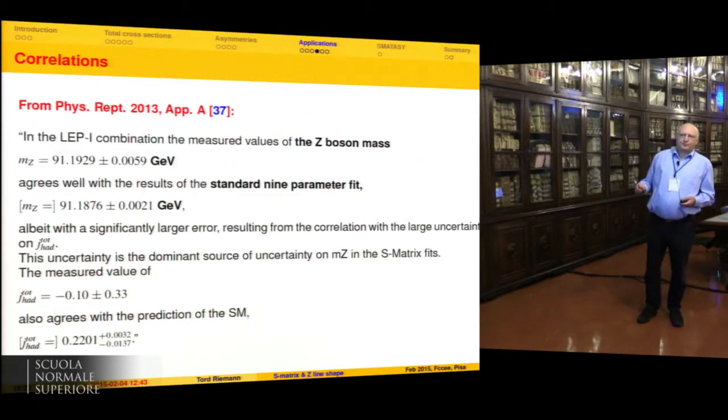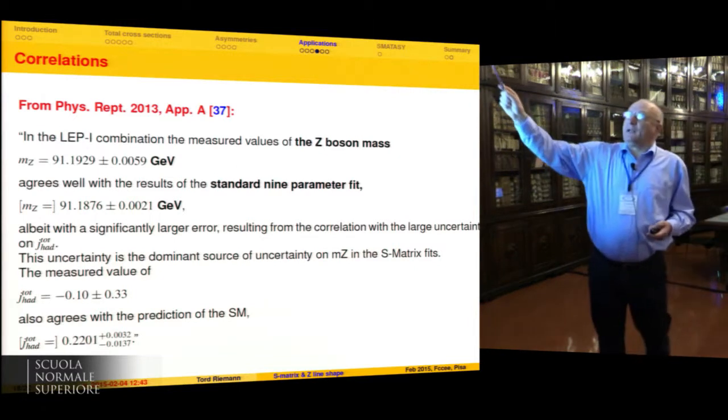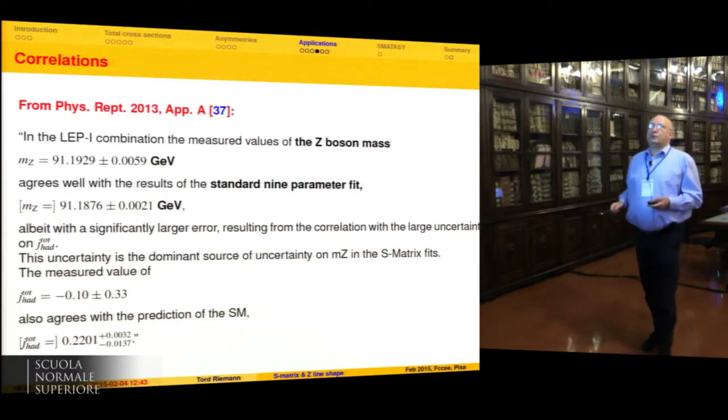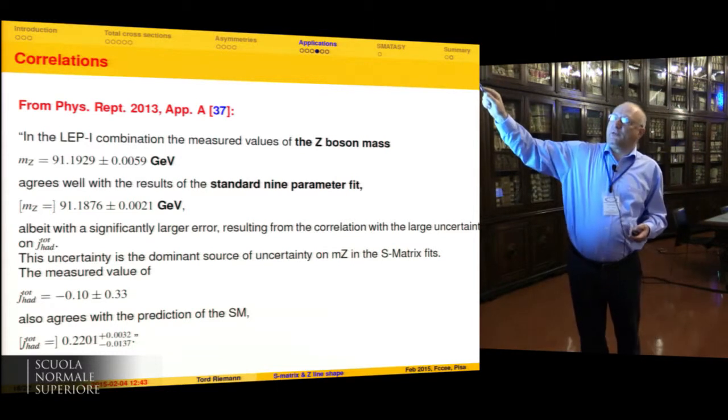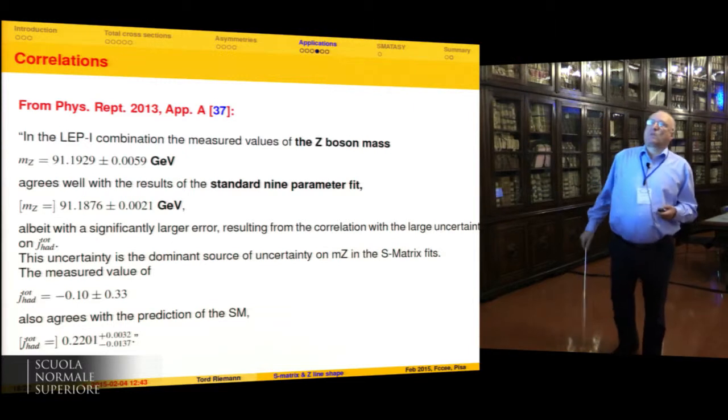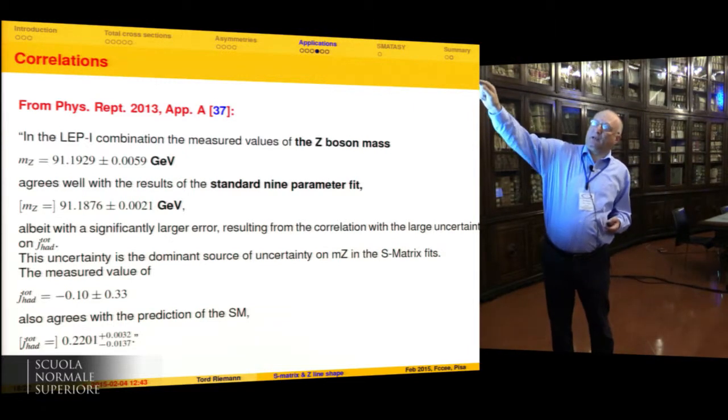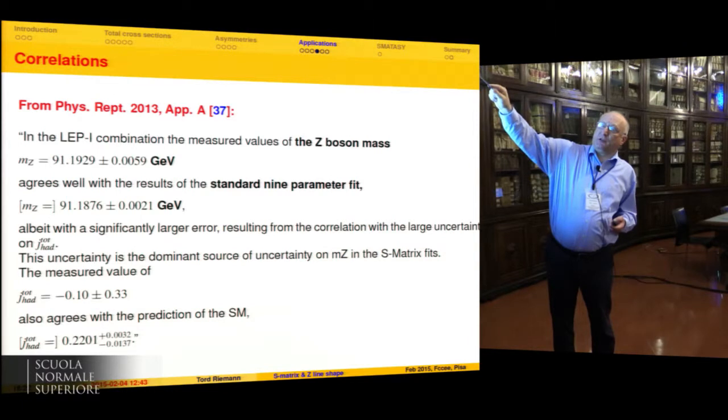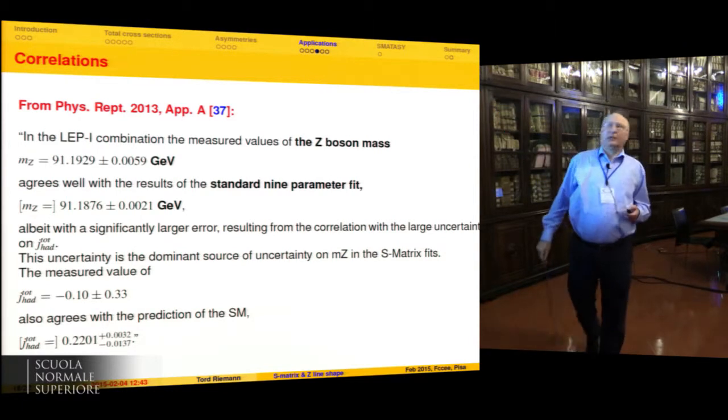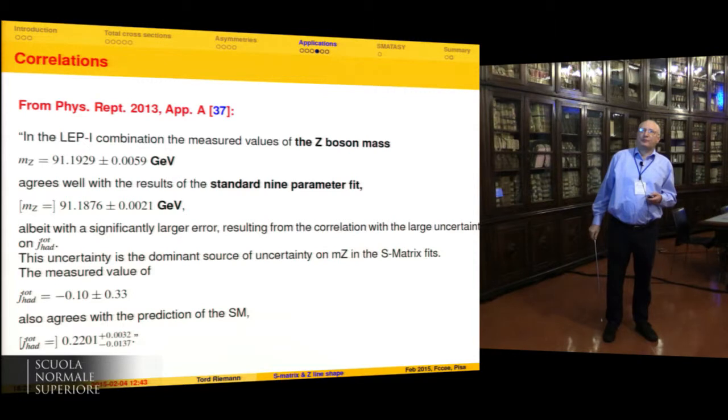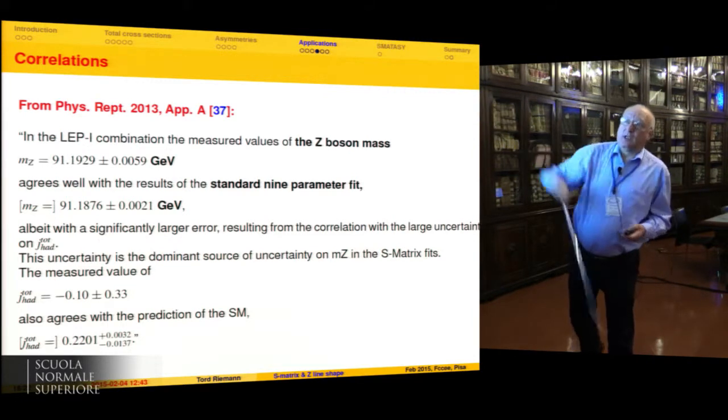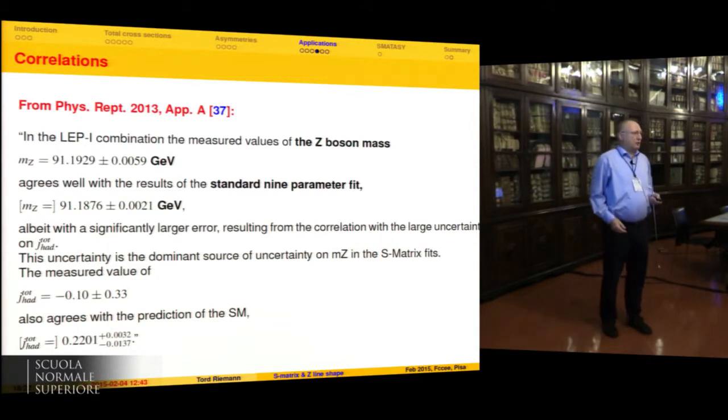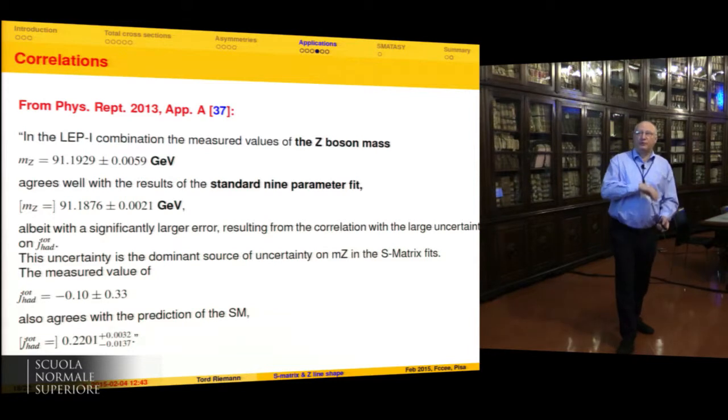Let me shorten a bit. The final analysis of LEP Z-boson physics contained also determination of the Z-boson mass in the S-matrix approach. You see the error is by a factor of three bigger. That is due to the uncertainty on the gamma-Z interference in that approach. Field theory predicts you the interference, you can calculate it, we have no problem with that.